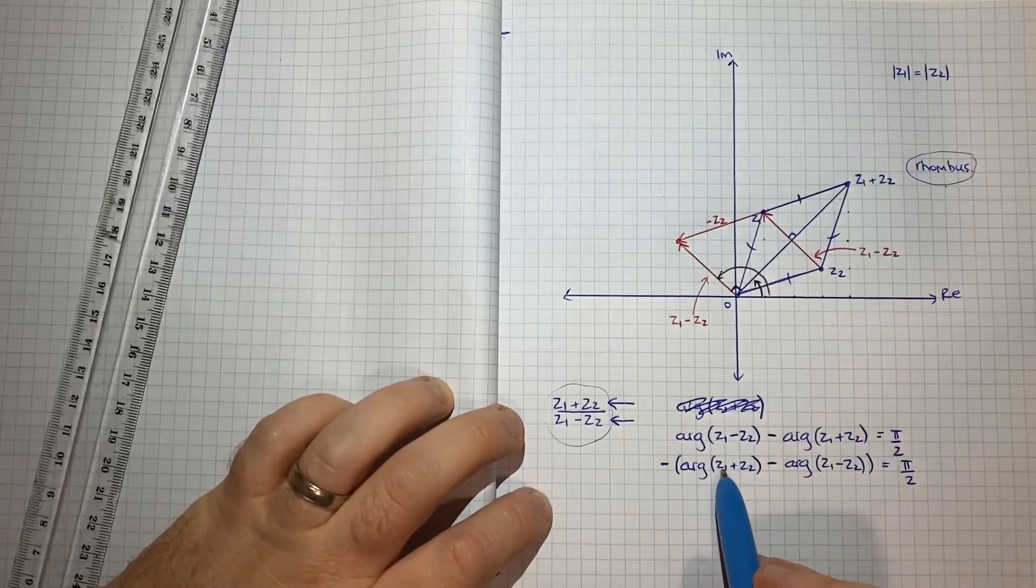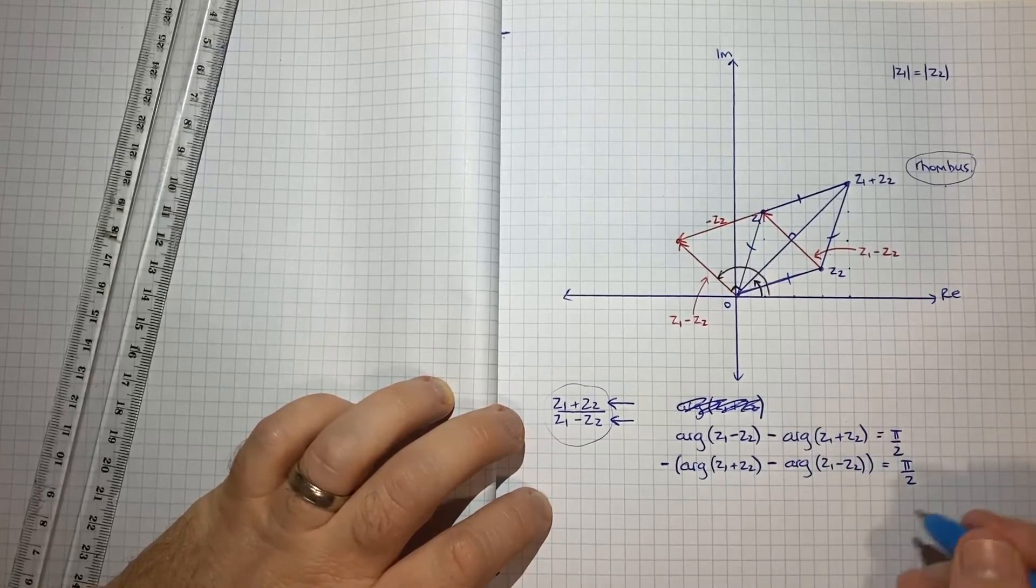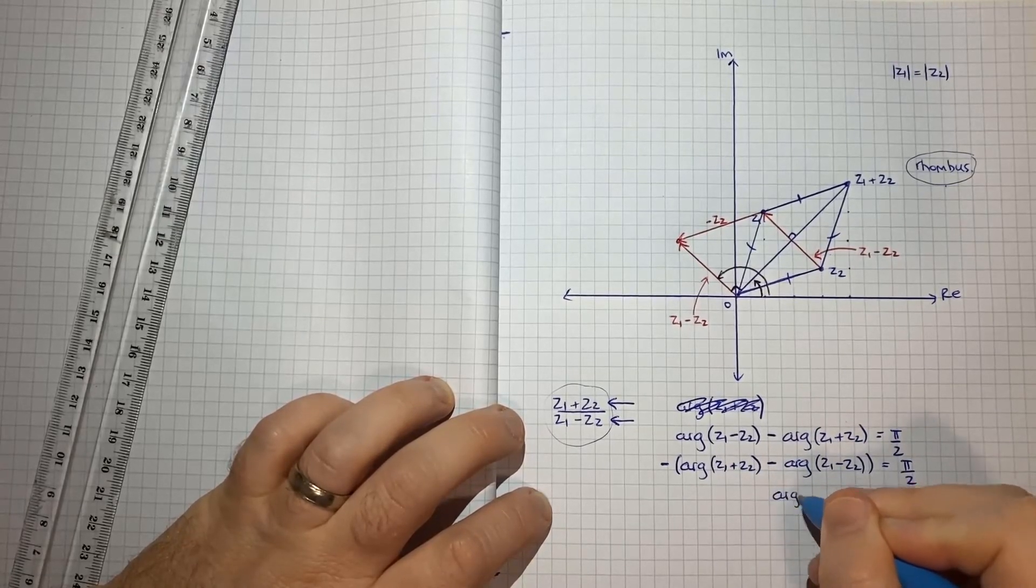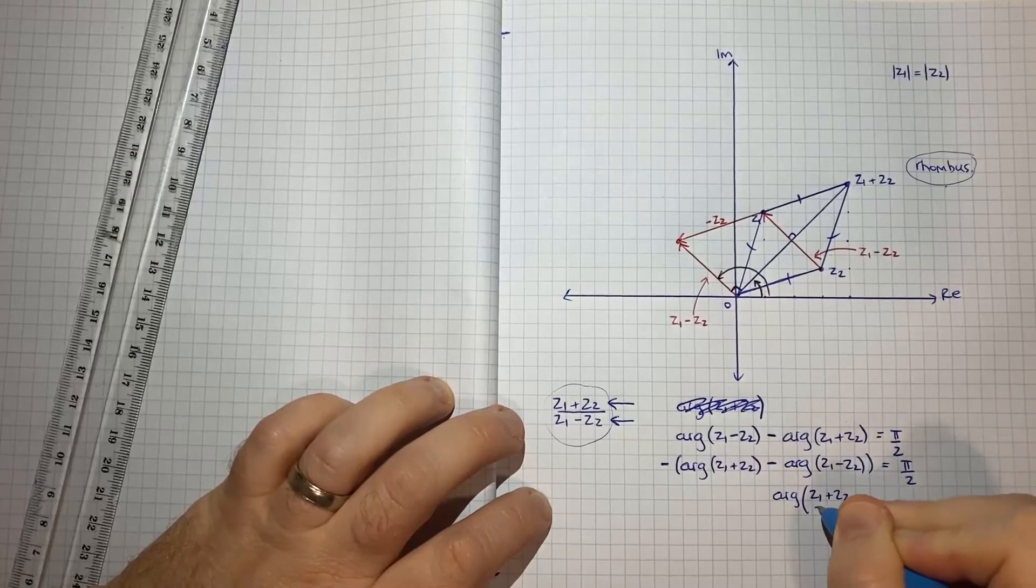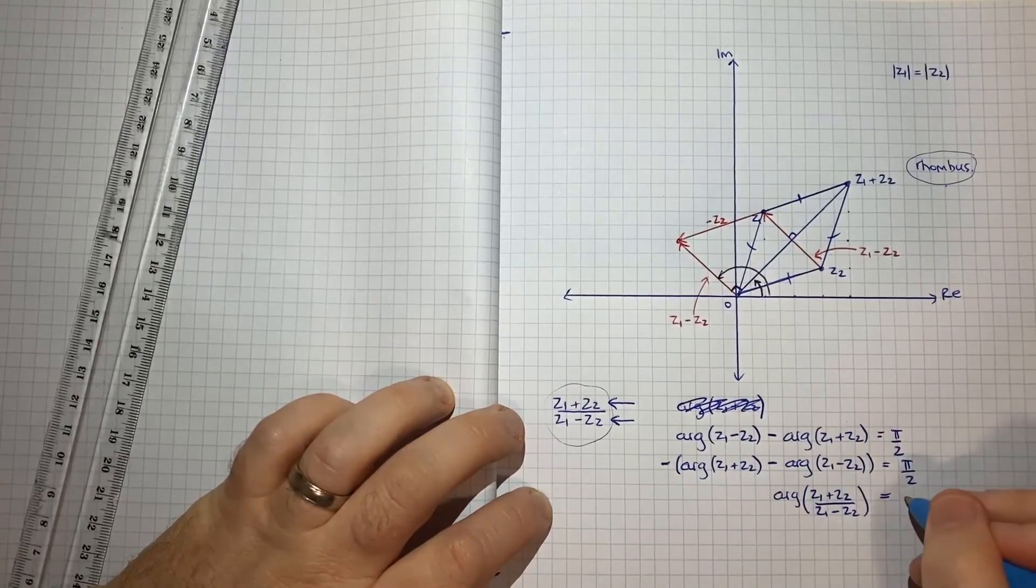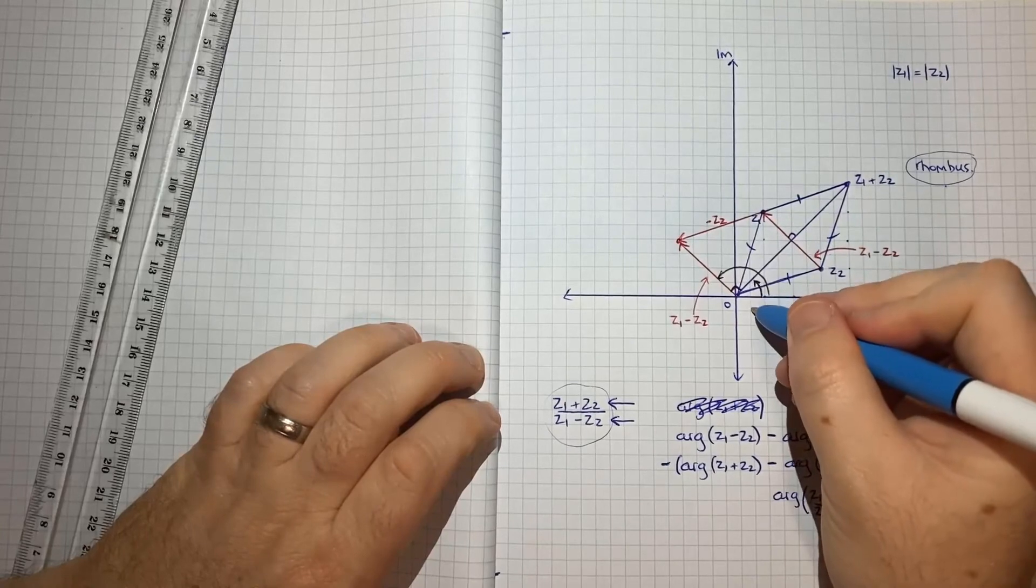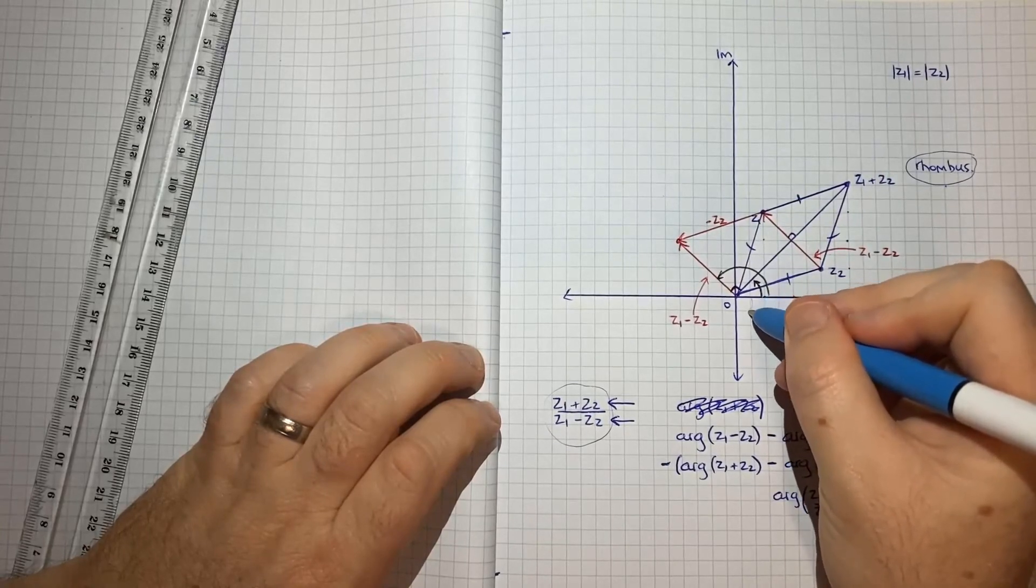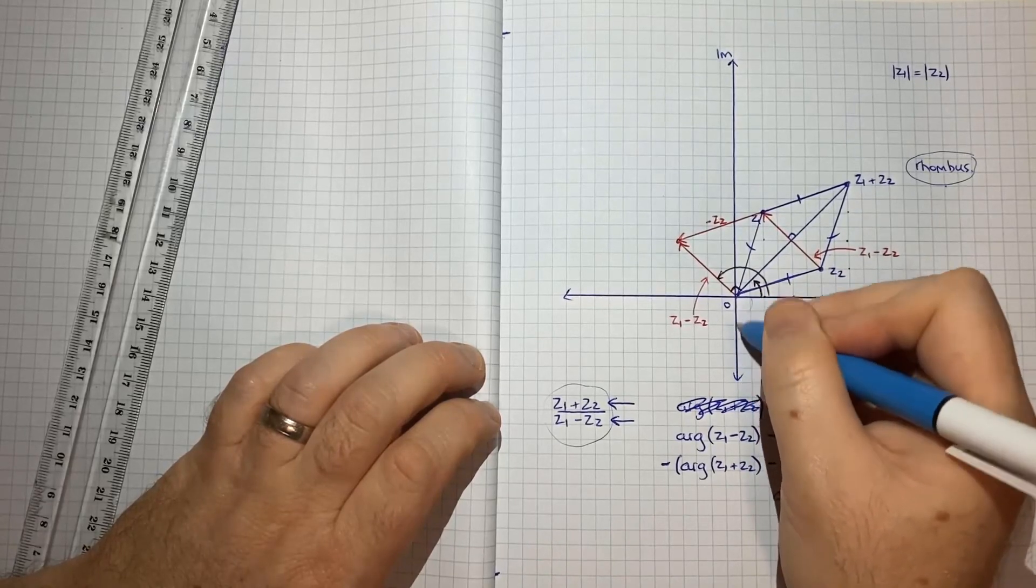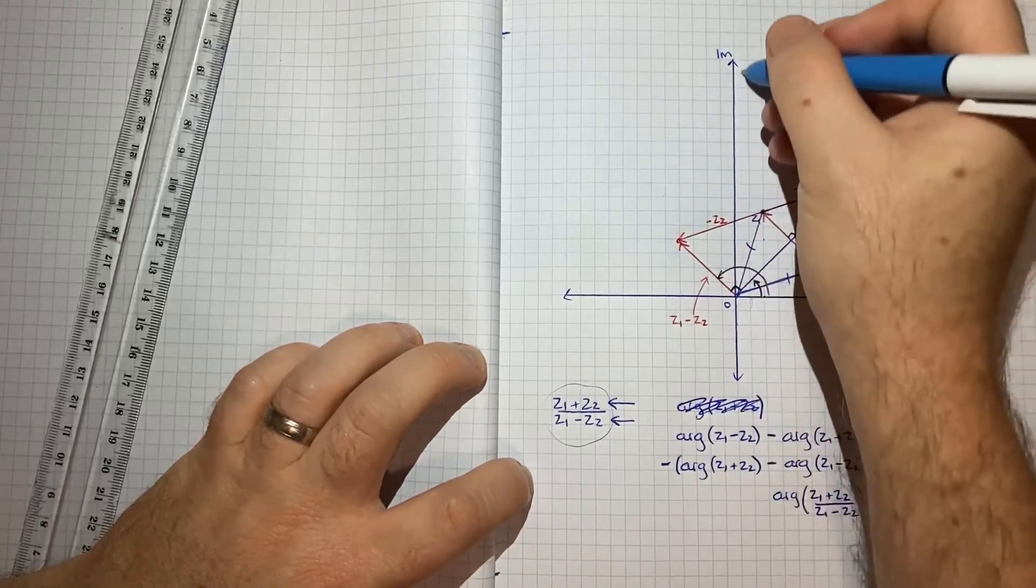Now we know that the argument of one thing minus the argument of another is equal to the argument of the ratio. So I can now say arg of z1 plus z2 on z1 minus z2 is equal to—and I'll bring the negative over—negative π over 2. And negative π over 2 is essentially coming to the imaginary axis just from beneath the real axis, so it's going to lie somewhere on this axis, which means it's purely imaginary because it's solely on the imaginary axis.